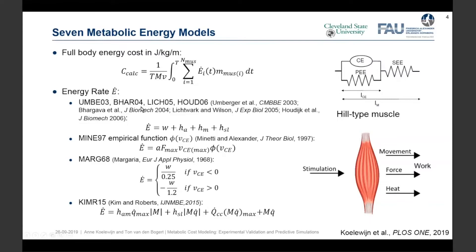The first four of the seven models are based on papers by Umberger, Lichtvark, Hodgkin, and Bhargava. They all have a similar form based on the first law of thermodynamics: energy consumed equals mechanical work done plus heat produced by the muscle. That heat has three terms: activation heat, maintenance heat, and shortening and lengthening heat. All these papers define equations for those heat terms based on single-muscle experiments like those done by A.V. Hill in the 1930s on frog muscles, where heat production was actually measured.